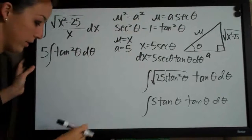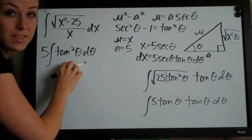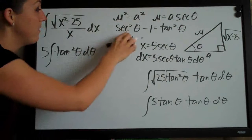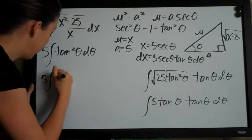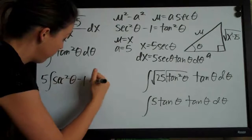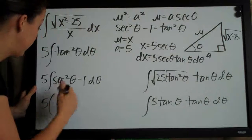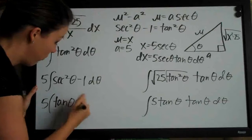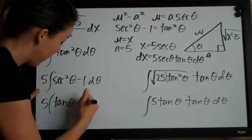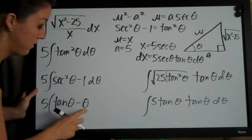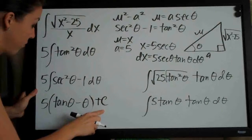Sorry for the airplane noise. Since tangent squared theta is difficult to integrate directly, we substitute back in secant squared theta minus 1, giving us 5 times the integral of secant squared theta minus 1 d theta. The integral of secant squared theta is tangent theta — a basic trig identity to memorize. So we get 5 times tangent theta minus theta, plus C to account for the constant of integration.